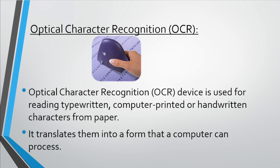Next is optical character recognition (OCR). OCR is a device used for reading typewritten, computer-printed, or handwritten characters from paper. It translates them into a form that a computer can process. It has a device that emits light which reflects off each character and returns back, generating a pattern that is sent to the computer. In the computer, OCR software generates a character based on the scanner result, so OCR performs character-by-character scanning.